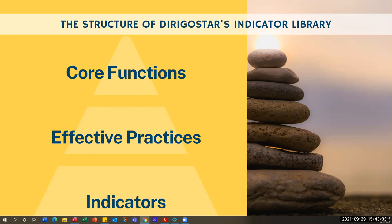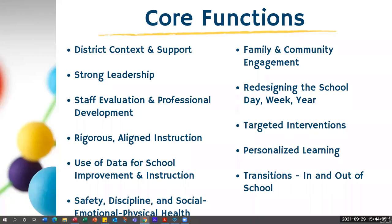When you look inside Derago Star there are quite a few indicators listed. Some of them you may already be doing, and for those you're doing well, you have two choices: you can go ahead and assess it, make sure you're fully implemented, and mark it off as a quick win; or you can skip those and focus on the next one you really need to work on. The core functions include district support, leadership, professional development, aligning instruction, using data, family and community engagement, redesigning the school day or week or year, targeted interventions, and personalized learning — which was added about four or five years ago, including metacognitive, blended, and social-emotional learning indicators.